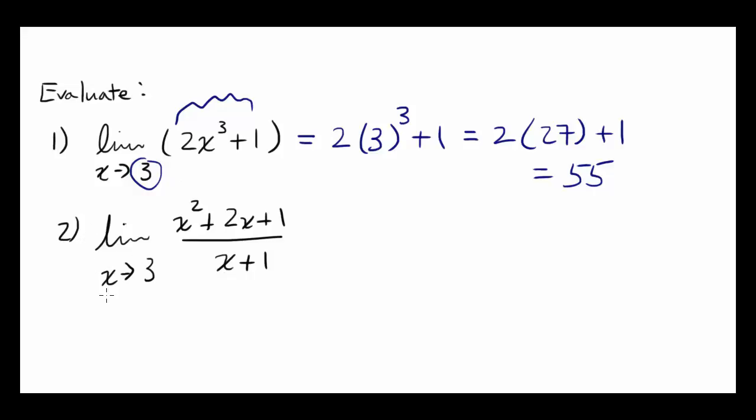The second one, limit as x approaches 3 of x squared plus 2x plus 1 over x plus 1. In this case, if the function is rational, you gotta check if the denominator is going to be 0 when you plug the x into it.